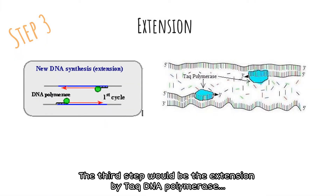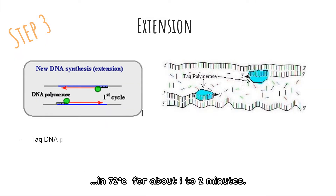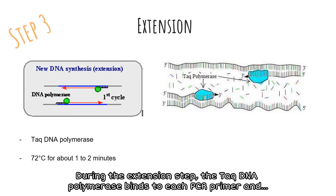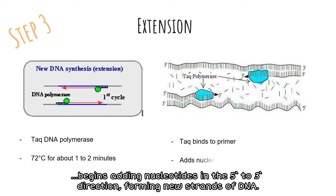The third step is the extension by Taq DNA polymerase at 72°C for about 1 to 2 minutes. The duration is dependent on the length of the amplicons — 1 minute per kilobase pair. During the extension step, the Taq DNA polymerase binds to each PCR primer and begins adding nucleotides in the 5' to 3' direction, forming new strands of DNA.